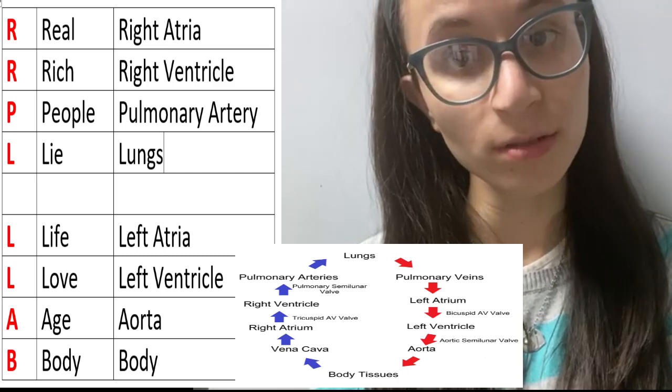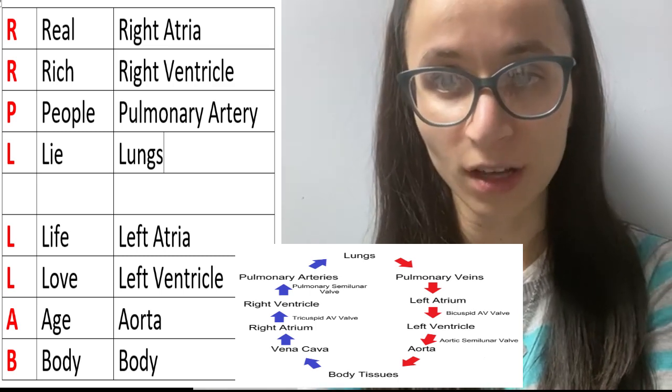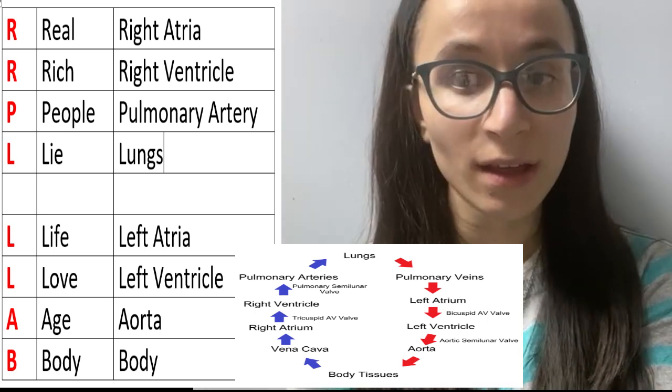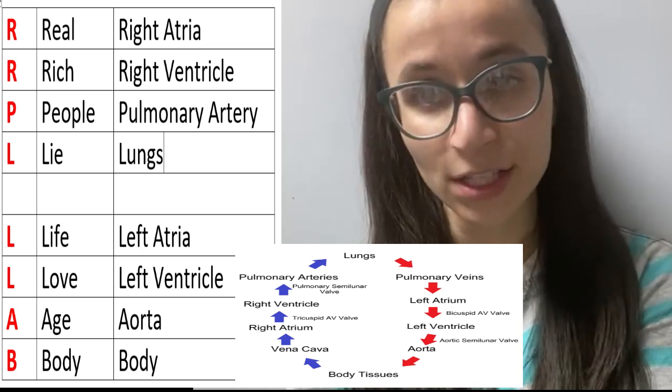From there, it gets oxygen because that's where we get the oxygen from—the lungs. And then we go on to the next part of the mnemonic. What do they lie about? Life, love, age, and body.